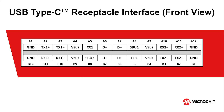The USB connector is rotationally symmetrical with 24 pins which connect properly the first time, every time. For power, this connector includes four ground pins and four V-Bus pins to support currents up to 5 amps. The connector also includes 14 data pins: eight positions for super speed differential data, four positions for USB 2.0 differential data, and two positions for single-ended data.